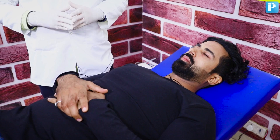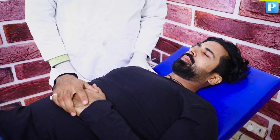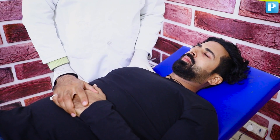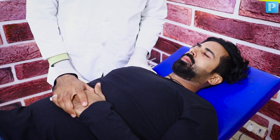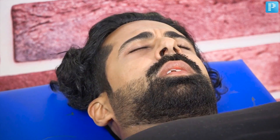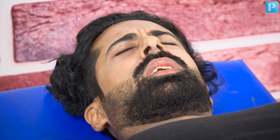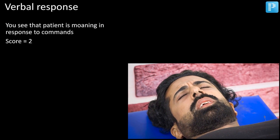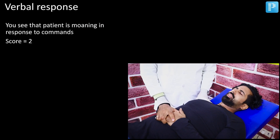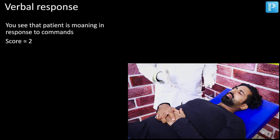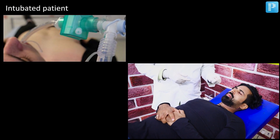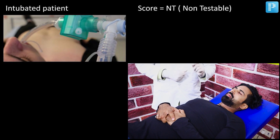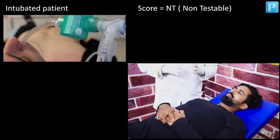Let's re-enact the scenario once again. I approach the patient and physically touch him, trying to elicit whether he will open his eyes and respond. You can see he is exhibiting a moaning — that will be a score of 2. On the other hand, if there is no response elicited, then we say it is 1. But if the patient is intubated with an endotracheal tube in situ, we are going to call it NT, meaning non-testable.